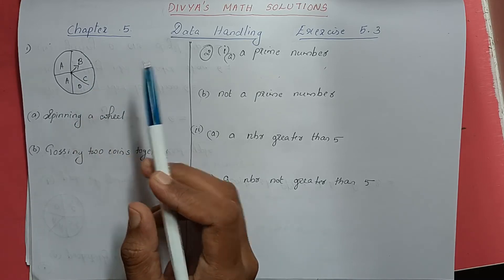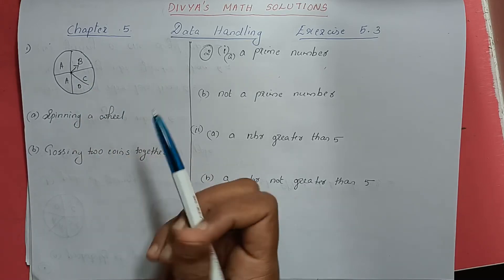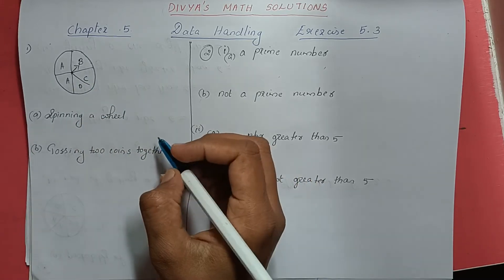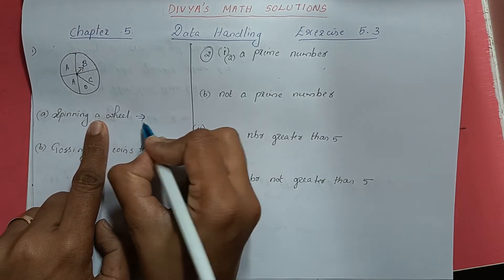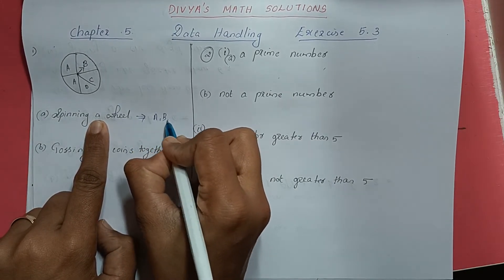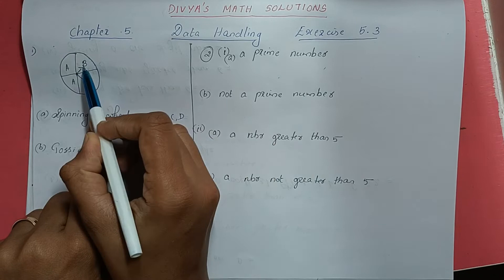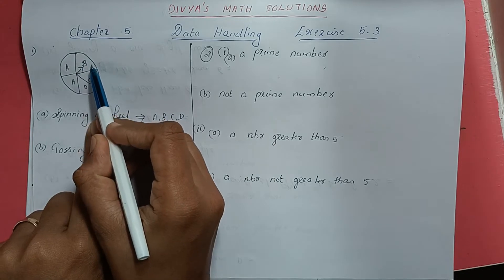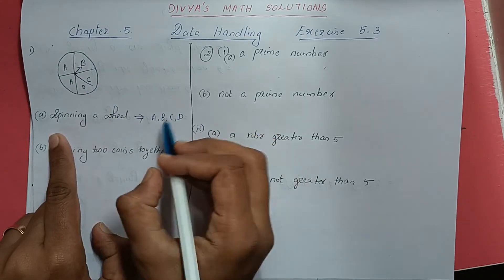There are 4 letters: A, B, C, D. So there are 4 outcomes. The outcomes are A, B, C, D. The wheel will point either to A or B or C or D. There are 4 outcomes.